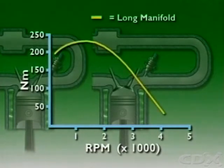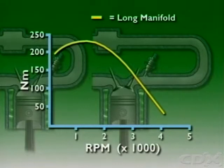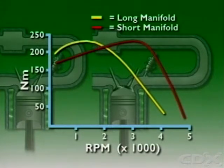In general, a long intake manifold produces high torque at lower engine RPM, and higher torque is obtained at higher engine RPM with a shorter intake manifold.